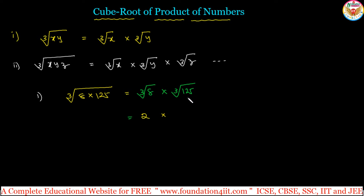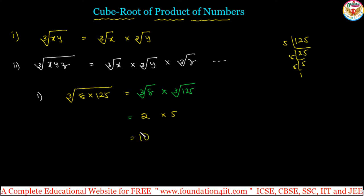And cube root of 125 — doing prime factorization of 125: 125 divided by 5 is 25, divided by 5 is 5, divided by 5 is 1, so 5 appears 3 times. So cube root of 125 is 5. Therefore, cube root of 8 multiplied by cube root of 125 is 2 into 5, which equals 10. So cube root of 8 into 125 is 10.